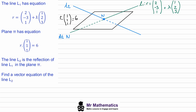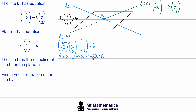At N, the general position of the line can be substituted in place of r and dotted with the normal vector of the plane to equal six — this gives the value of lambda at this point. We substitute the general position vector of the line, dot it with the normal vector, and set it equal to six. Simplifying the left-hand side gives six lambda equals six, therefore lambda equals one. Substituting this value of lambda back into the equation of the line gives N with coordinates three, negative one, and four.